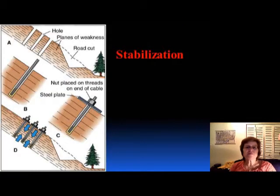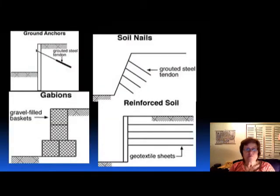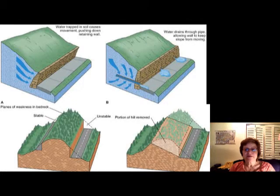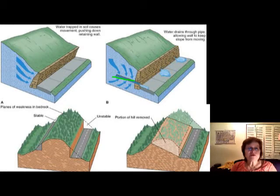These are a couple of methods of stabilization — they can put nails in and different pipes and structural elements to make the slope more stable. It also shows that if you build a retaining wall without pipes collecting the water, it's a big problem. If possible, you want to cut your slope depending on what the weakness plane in the rocks is.